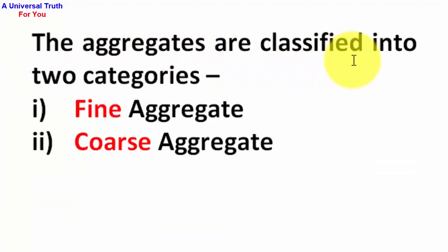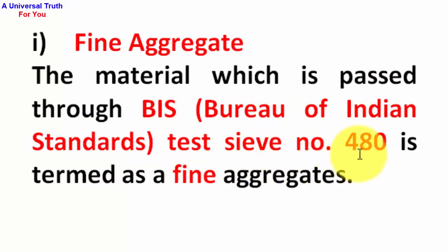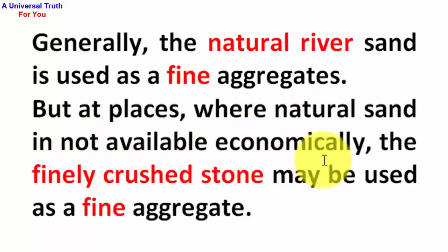Aggregates are classified into two categories: first is fine aggregates, second is coarse aggregates. Fine aggregates: the material which passes through BIS (Bureau of Indian Standards) test sieve number 480 is termed as fine aggregate. Generally, natural river sand is used as fine aggregate, but where natural sand is not available economically, finely crushed stone may be used.